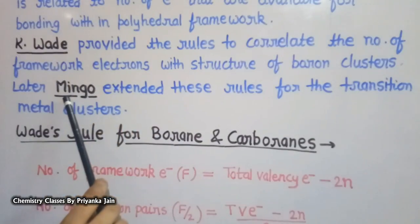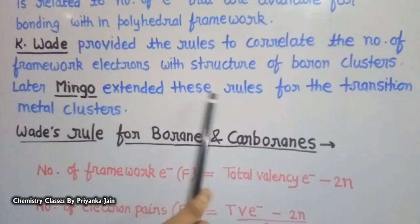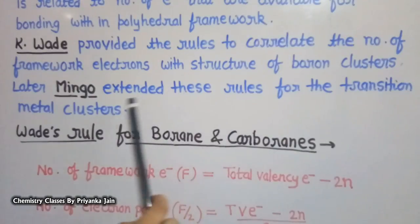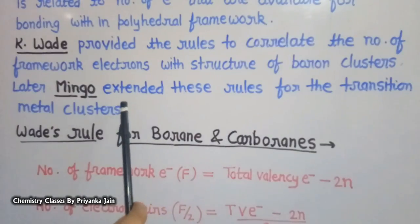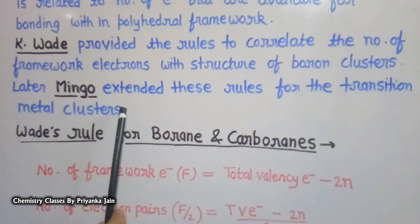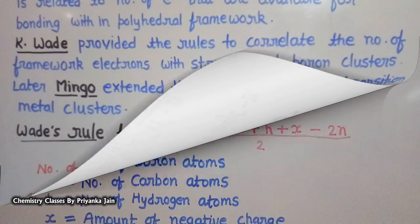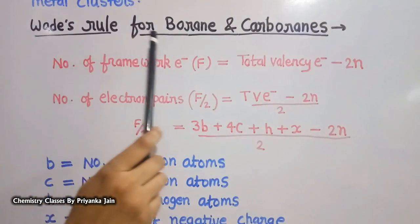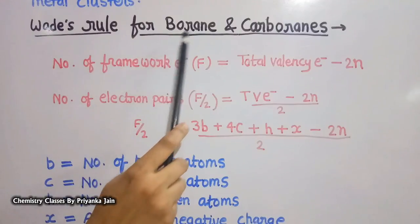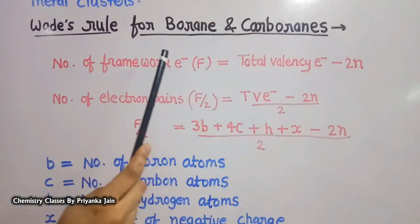Later, another scientist, Mingos, extended these rules for transition metal clusters, and hence these rules are also known as the Wade-Mingos rule. Firstly, we will see Wade's rule for boron and carbon clusters.